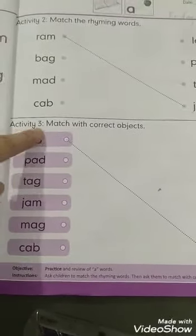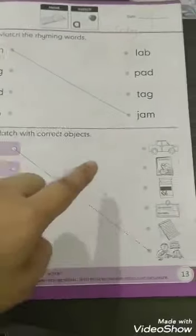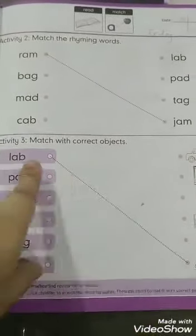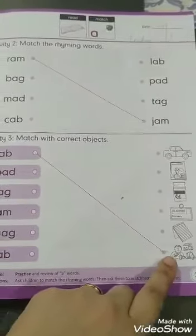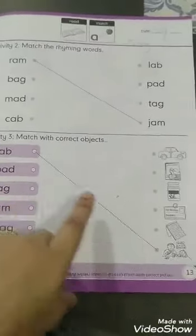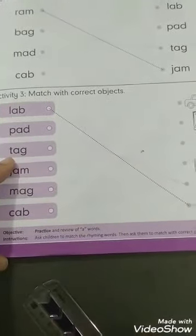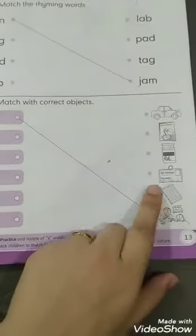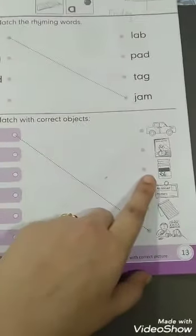Hamari third statement hai - Activity 3: Match with correct objects. Here are some words and here are some pictures. Humne in words ko inki sahi pictures ke saath match karna hai. First word is lab. Where is lab? Here is lab. Second word is ad pad. Where is pad? Here is pad. The egg tag - where is tag? Here is tag. The M jam - where is jam? Here is jam.